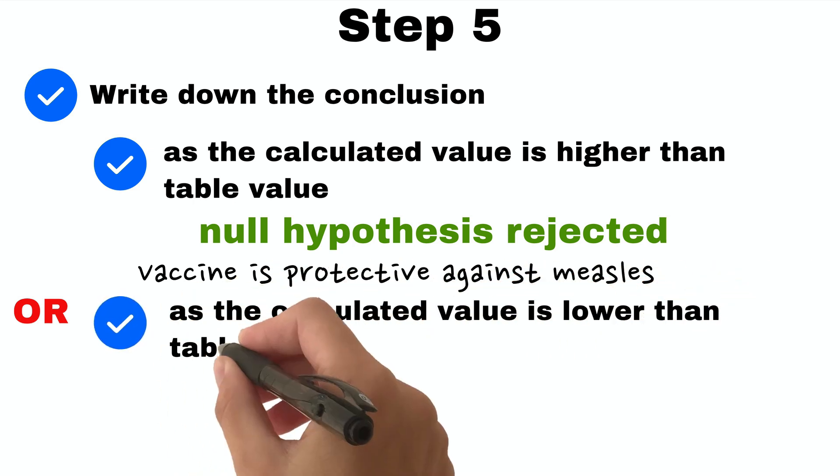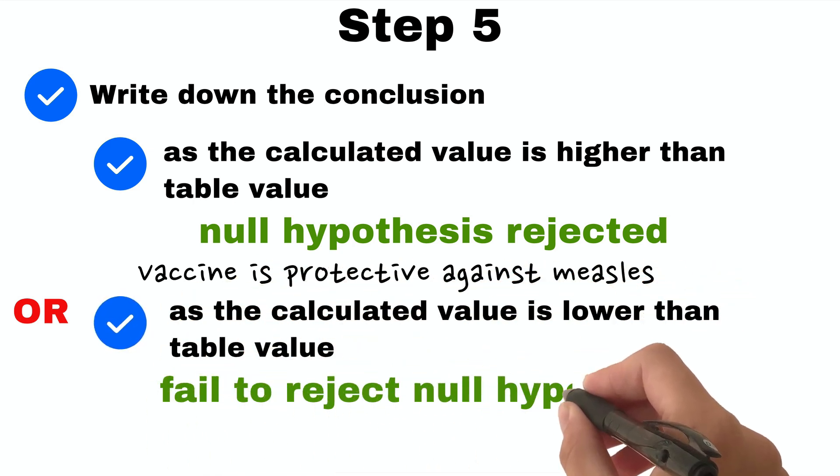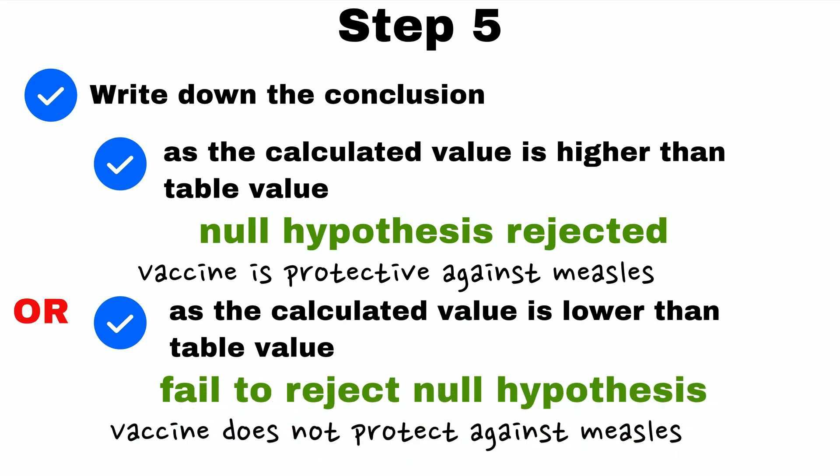If calculated value is lower, we fail to reject null hypothesis, and we can say that vaccine does not protect against measles.